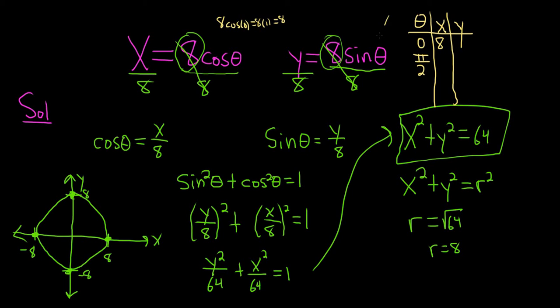If you plug in 0 for the sine, sine of 0 is 0, so your y is just going to be 0. So when theta equals 0, we're right here. So this ordered pair 8, comma 0 corresponds to theta equals 0.